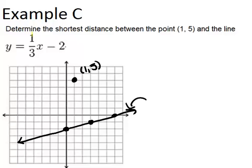Since this original line has a slope of 1/3, any line perpendicular to it has to have a slope of negative 3. Because we take the opposite reciprocal and get negative 3 over 1, which is negative 3.